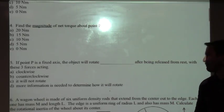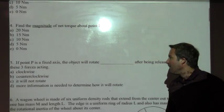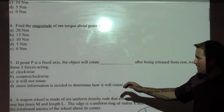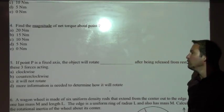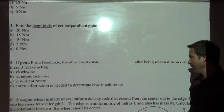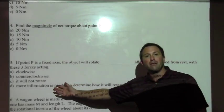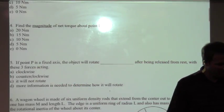All right, and so actually that makes number five easy for us, because if point P is fixed, is a fixed axis. So if that point was held and not able to move, then the object will not rotate, because the total torque is zero on that object.